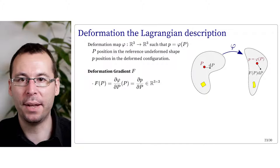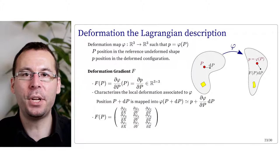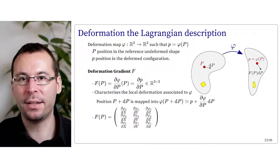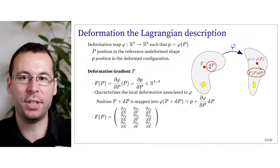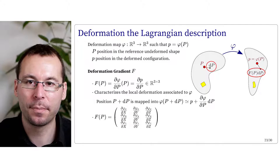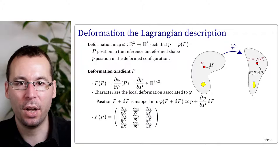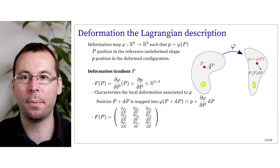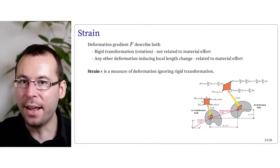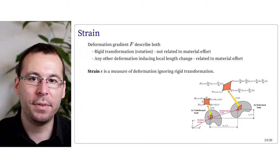Typically, if we look at the action of the deformation gradient on a small vector element, a position p plus dp maps to approximately p plus F(P) dP. So this deformation gradient is an indication of how vectors, angles, and distances are going to be modified by the deformation. When looking at the deformation of a continuous material under some effort, we look at internal forces called stress and their action on the deformation of the shape called strain. This internal stress causes a local deformation of the shape, not a global translation and rotation which are not related to material effort.